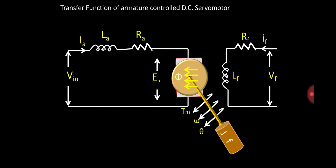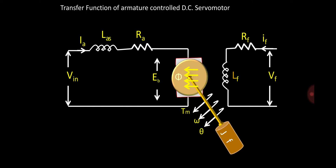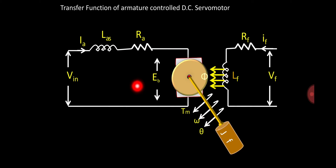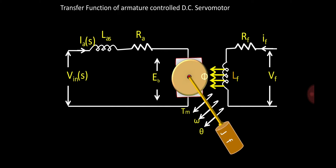We are going to derive the transfer function of armature controlled DC servomotor. The circuit diagram is in front of you. In step number one, we obtain the equation for IA. The transfer function is the ratio of Laplace of output to Laplace of input. We convert the whole circuit into S domain: inductance LA becomes LAS, RA remains same, IA becomes IA(S), VIN becomes VIN(S), and back EMF EB becomes EB(S).